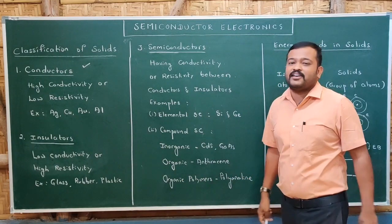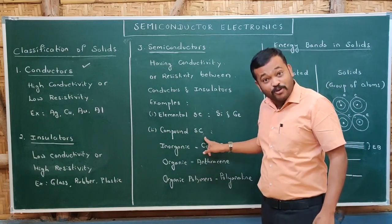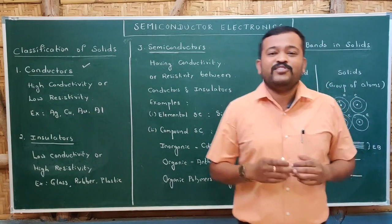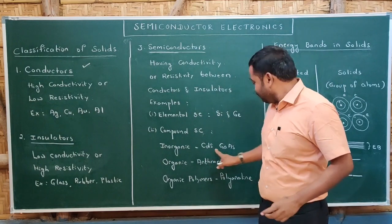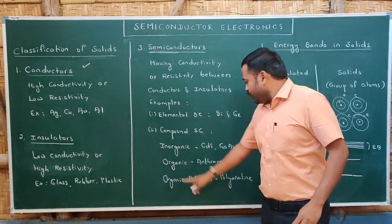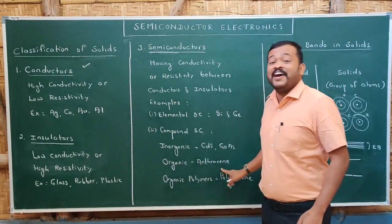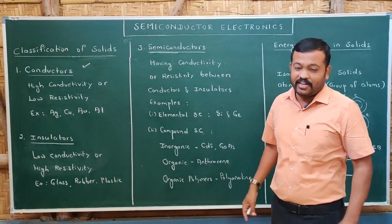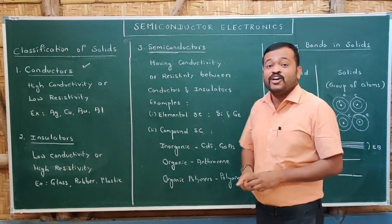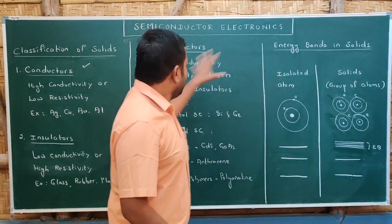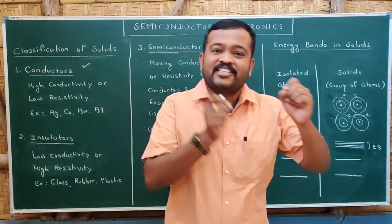Semiconductors are also available in the form of compounds — let me call them compound semiconductors. Among inorganic compound semiconductors, examples are cadmium sulfide and gallium arsenide. There are also organic semiconductors, such as anthracene. Even organic polymers like polyaniline are semiconductors. These are the examples of semiconductors.